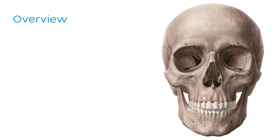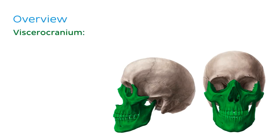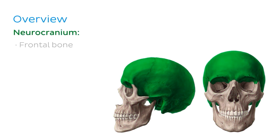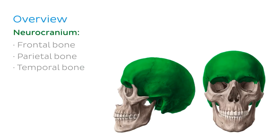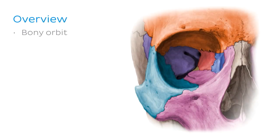Now that you're familiar with the parts of the skull, let me give you an overview of what we'll be covering in today's tutorial. We're going to be covering the anterior and lateral views of the skull, but more specifically, we're going to be focusing on nine bones that can be seen between these two views. First, we'll focus on bones of the viscerocranium, including the nasal bones, the maxillae, the zygomatic bones, and the mandible. Then we'll move on to discuss some bones of the neurocranium: the frontal bone, the parietal bones, the temporal bones, the sphenoid bone, and the ethmoid bone. Next, we'll talk about the bony orbit, which encapsulates all of the structures of the eye.